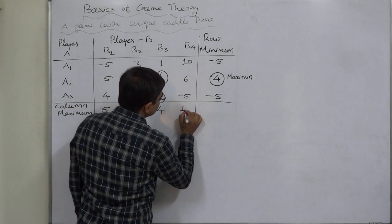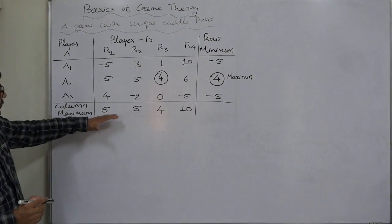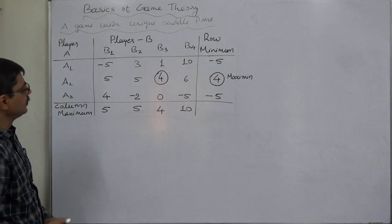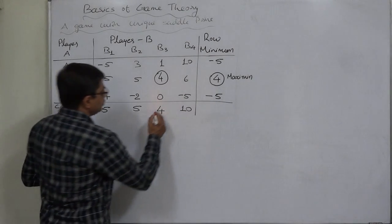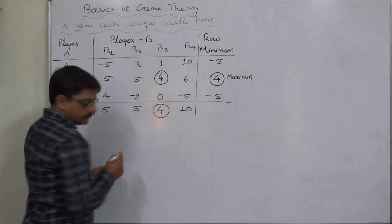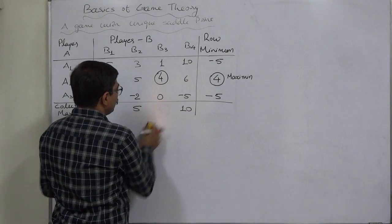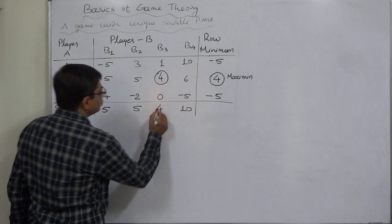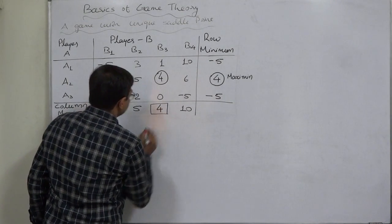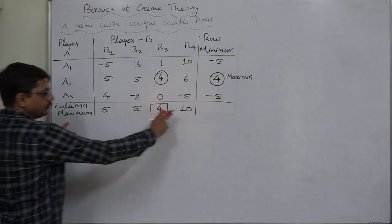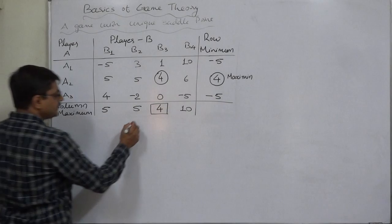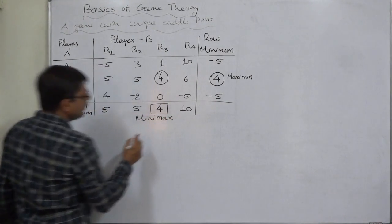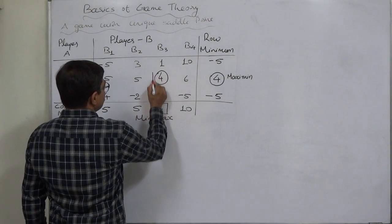In the 1st column it is 5, in the 2nd column it is also 5, in the 3rd column it is 4, and in the 4th column it is 10. These are the maximum values from each column. Now select the minimum out of these maximums — this is the minimax value, the minimum of the maximums. Cover this value with a square.